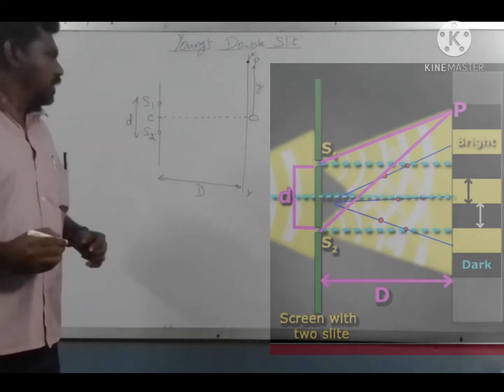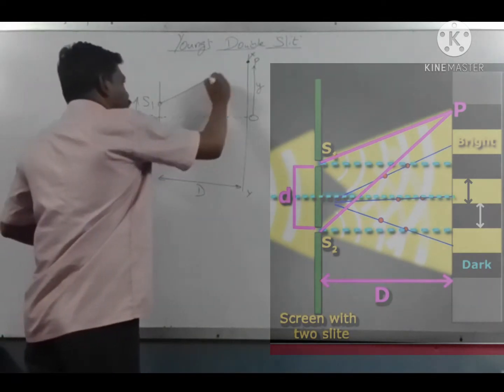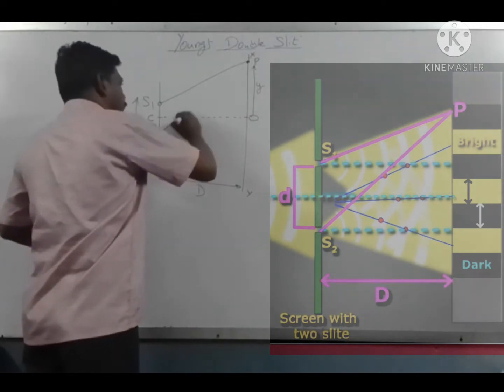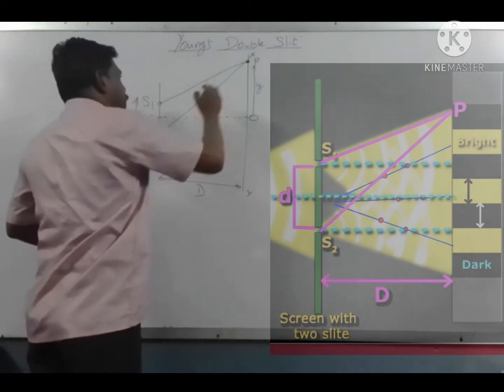Light from S1 and light from S2 travel to meet at point P on the screen.